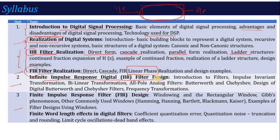In Unit 2 you will design IIR filters using various methods: the Impulse Invariant method, the Bilinear Transformation method, and using these methods you will design Butterworth or Chebyshev filters. In Unit 3 you will study FIR filter designing using the windowing method. There are different windows available: Rectangular window, Hamming window, Hanning window, Bartlett window, and Blackman window — and you will solve examples using these.